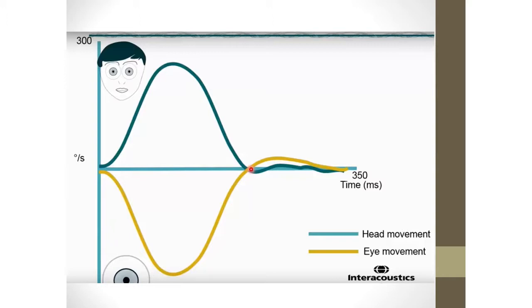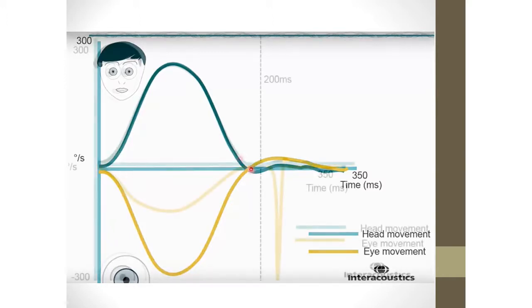But in the end, you end up with a graph like this. This is head movement here. And of course, we see the eye movement is equal and opposite to it. And when you have a result like that, that's normal. So there's nothing wrong with that semicircular canal.